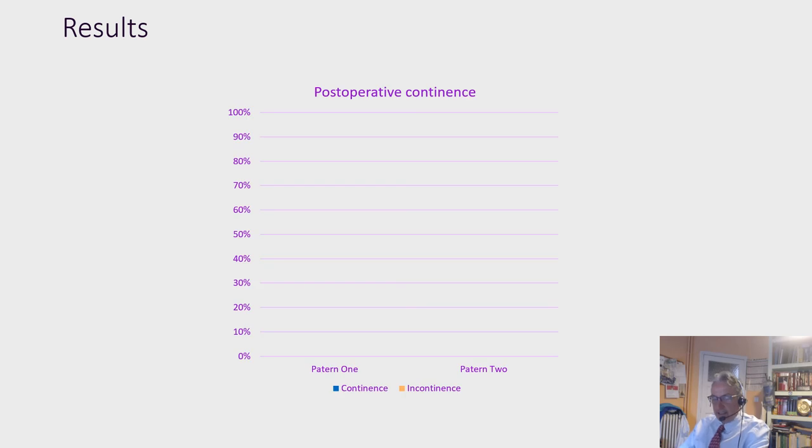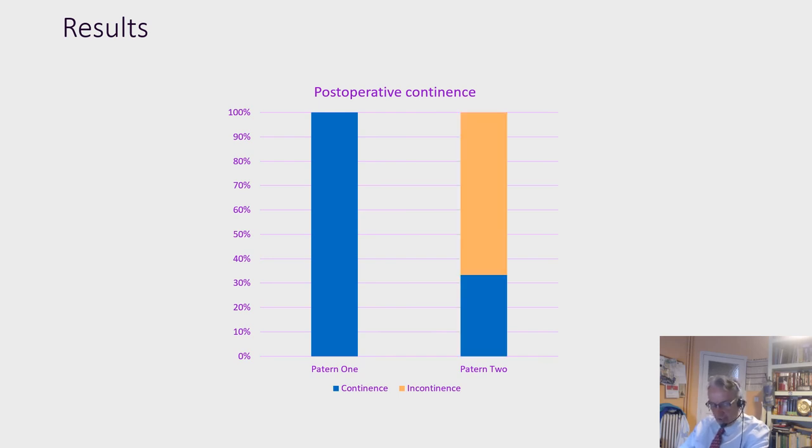Patients in pattern 1 achieved continence. The 6 patients in cluster 1, 100%, achieved continence, but only 1 patient in cluster 2, 33%.